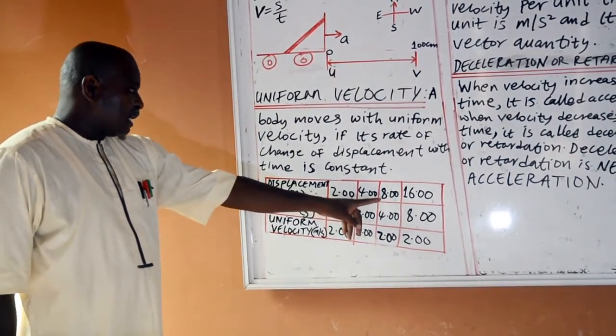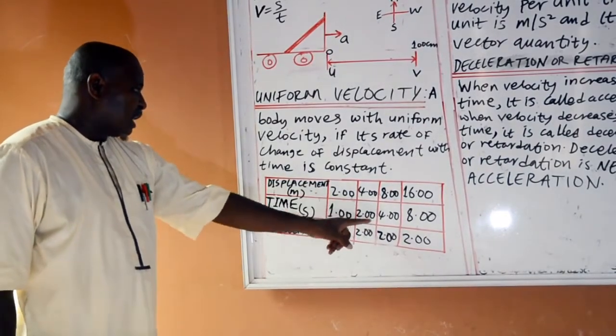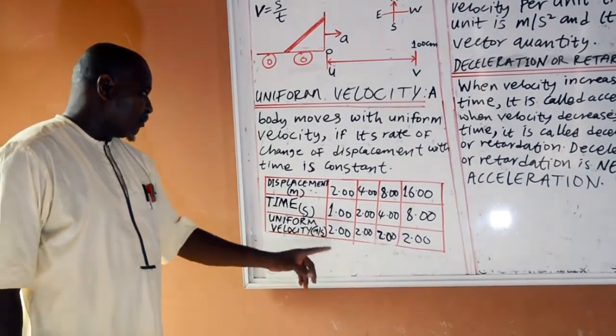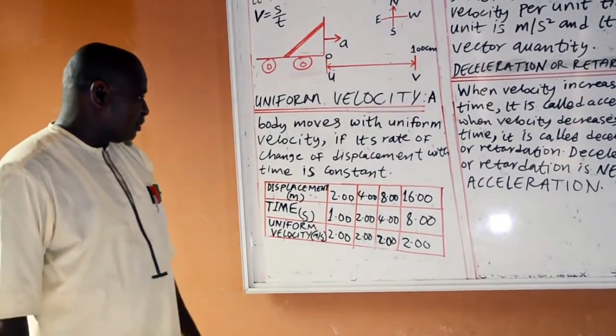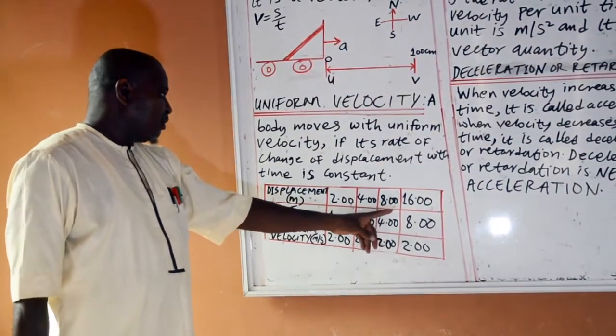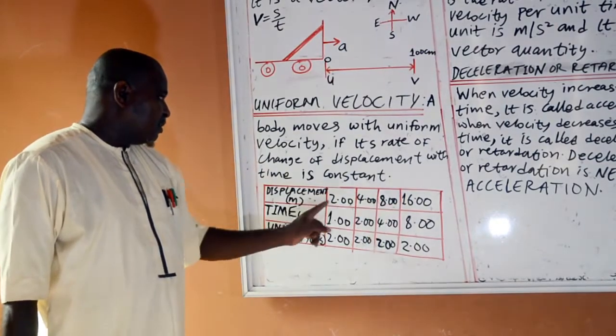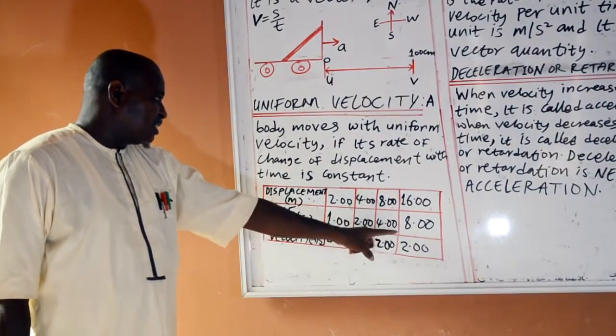On the third part, the displacement is 8 m. The time is 4 seconds. When you divide the displacement by time, you get 2 m per second. The fourth part, the displacement is 16 m. The time is 8 seconds.